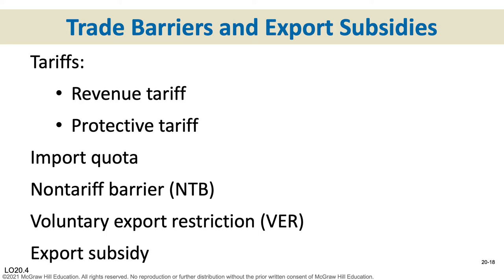Sometimes instead of a tariff, the United States will enact an import quota. Quotas are not taxes — they're absolute limits on the number of a good that can be imported, expressed in terms of units or dollar value. Quotas are much more restrictive than tariffs: tariffs add to the price, so consumers pay the world price plus the tariff. Quotas keep a good out entirely once the maximum import amount is reached. A non-tariff barrier is any government restriction against an import that isn't a tariff or a quota.